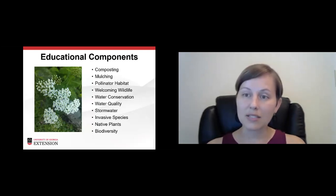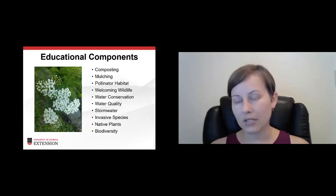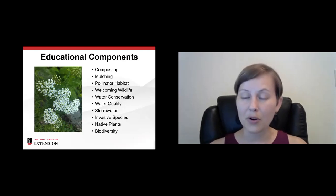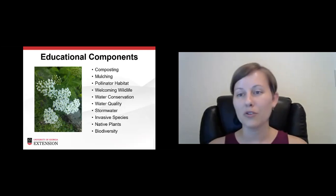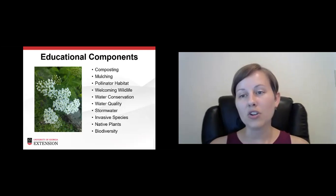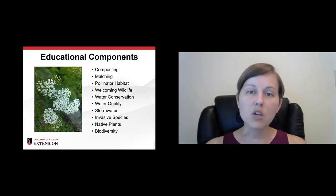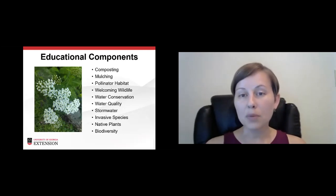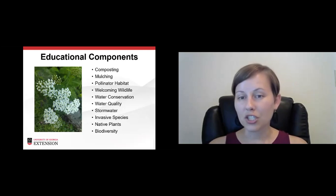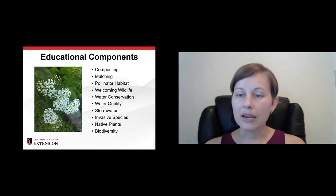So the program is based on 10 different educational components, and we'll go over one of them a little bit today. This is targeted towards the general layperson. I've had some groups of very avid master gardeners or master naturalists that still say they've learned a lot from the program. I've had some that learns a lot from some components, but others they've studied up a lot on their own. But our target is our general Georgia homeowner, business owner, we want this to be accessible for everybody. So we have 10 basic educational components: composting, mulching, pollinator habitat, welcoming wildlife, water conservation, water quality, stormwater, invasive species which focuses on plant species, native plants, and biodiversity.